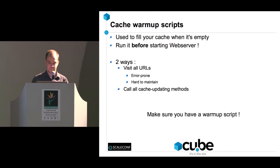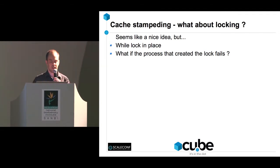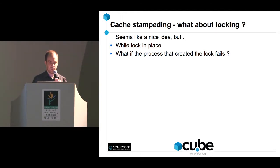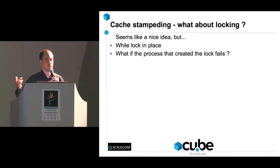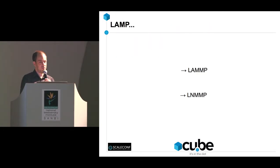You might think: why not just put a lock in place? The first person gets a cache miss, a lock is placed, and others wait until the query finishes. The issue is that while the lock is in place, all those extra connections pile up on Apache or nginx, using more and more memory — potentially hitting a connection limit. Second, if the process that creates the lock fails, the lock never gets released. Locking in general — I would try to avoid it. Database locks are annoying, and these kinds of locks are equally annoying.